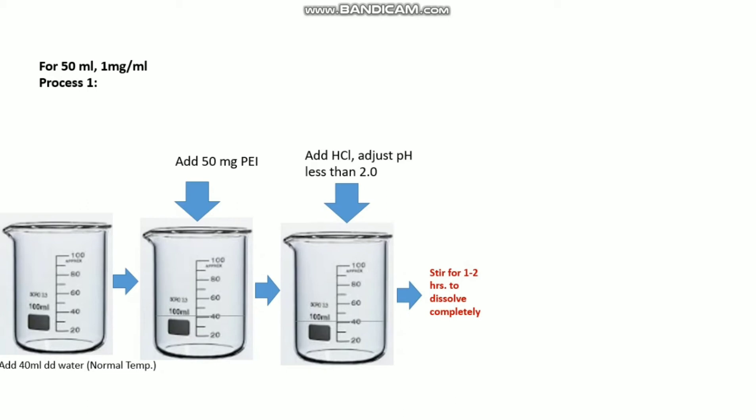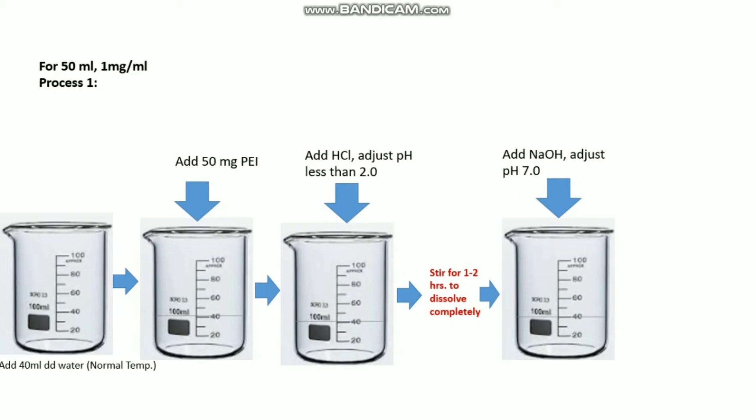If you want to follow the acidic environment method, after stirring 1 to 2 hours when you observe it's completely transparent, then add NaOH to adjust pH to 7 and then volume makeup up to 50 ml.